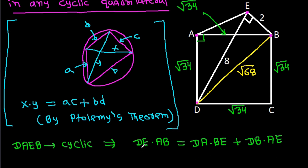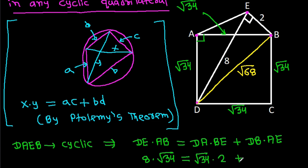DE is 8, AB is the square root of 34, DA is the square root of 34, BE is 2, and DB is the square root of 68. Substituting: 8 times the square root of 34 equals the square root of 34 times 2 plus the square root of 68 times AE.